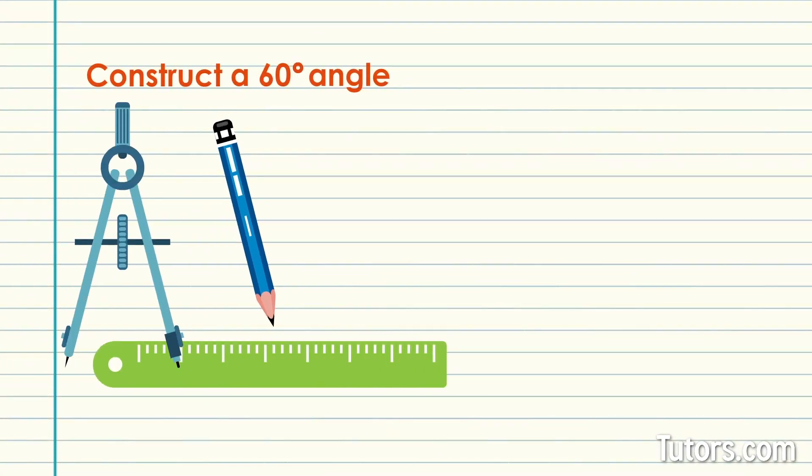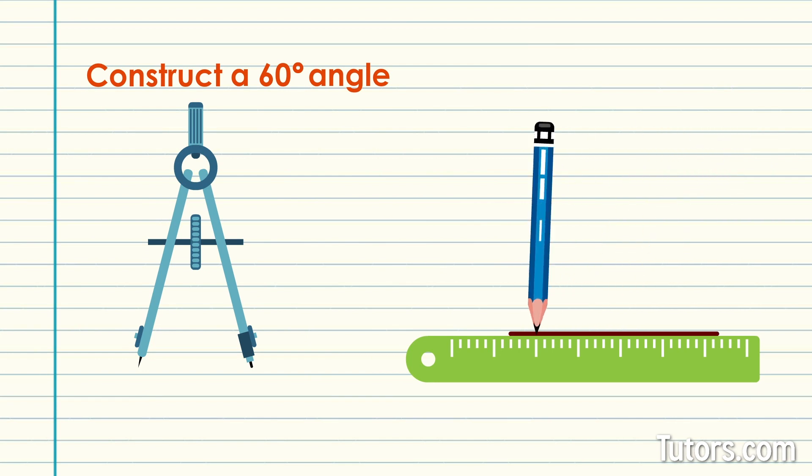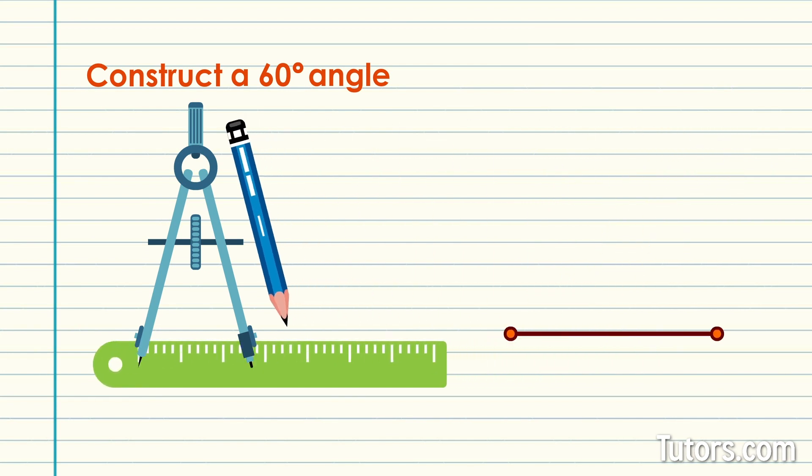First, construct a line segment with a straight edge. Label its endpoints. In our drawing, we will call them points O and G.